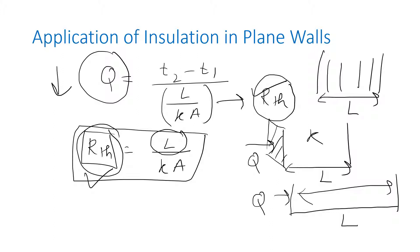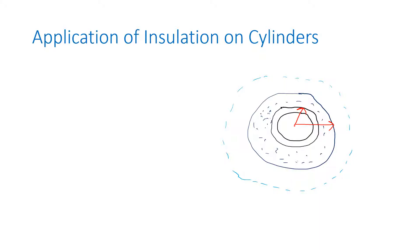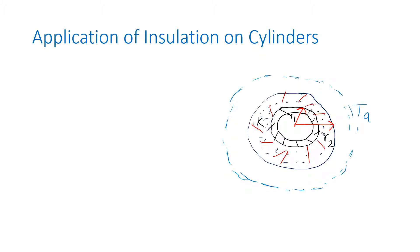This is not the case when we talk about cylinders and spheres - we have a different case there. The next topic is application of insulation on cylinders. Observe the image: the dark line represents our tube having outer radius r1. I have added insulating material shown by red lines. After adding the insulating material, the total radius becomes r2. This insulating material has thermal conductivity k.